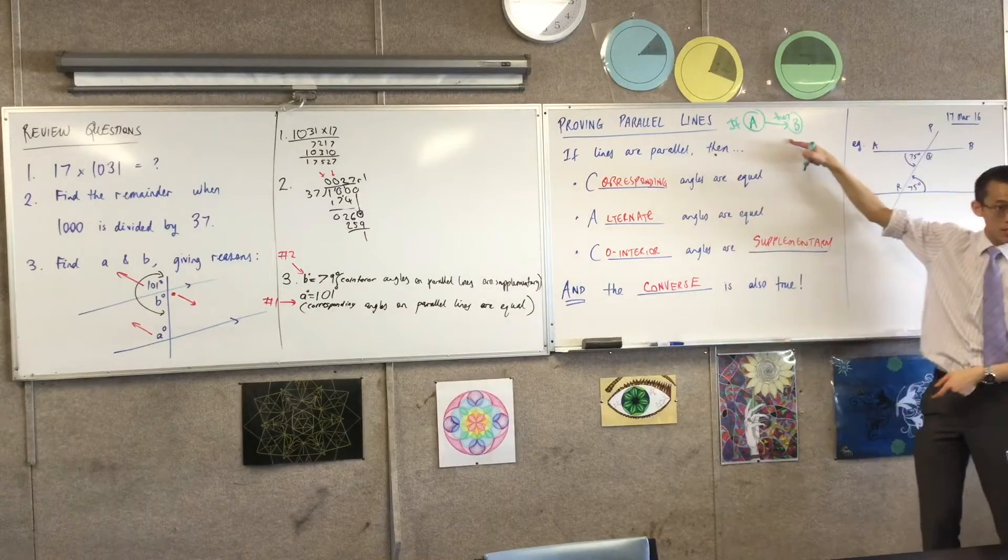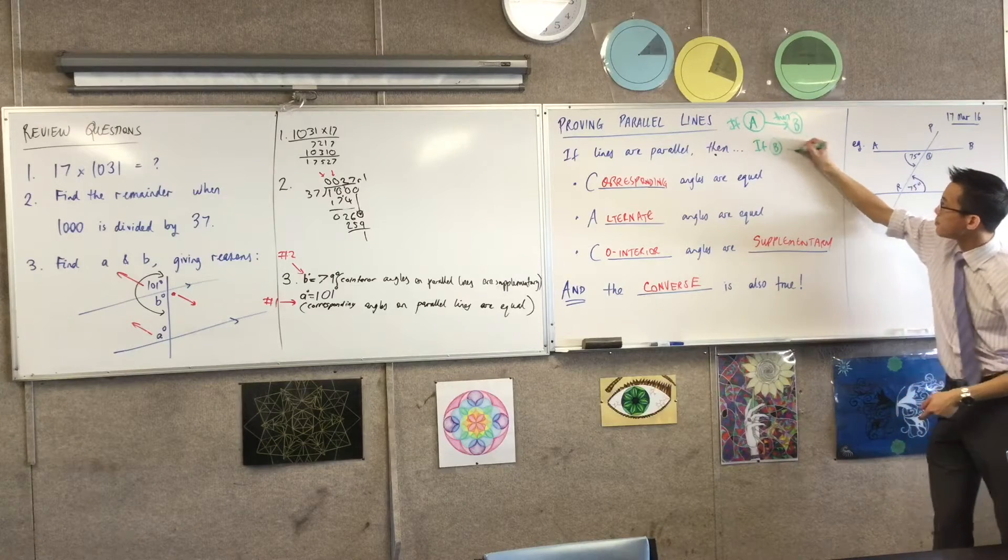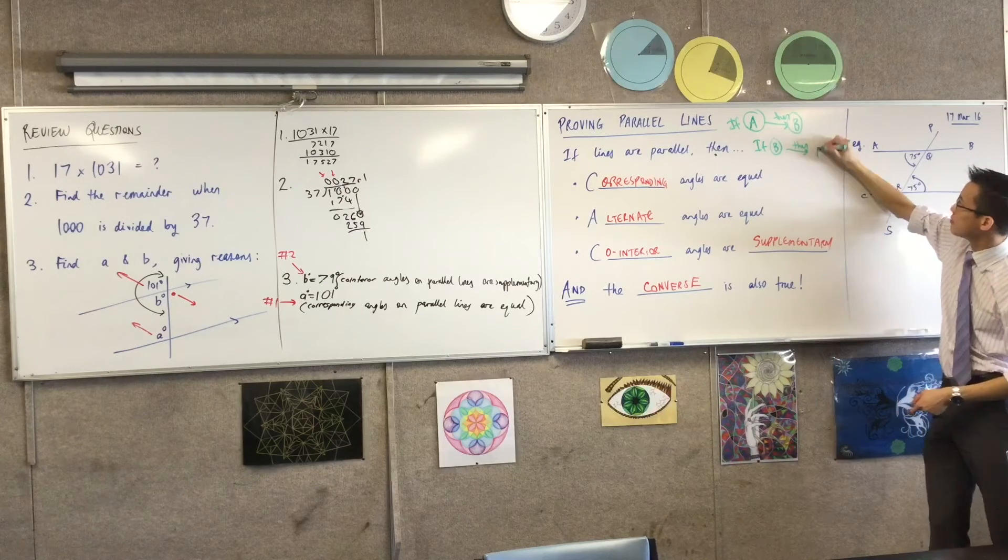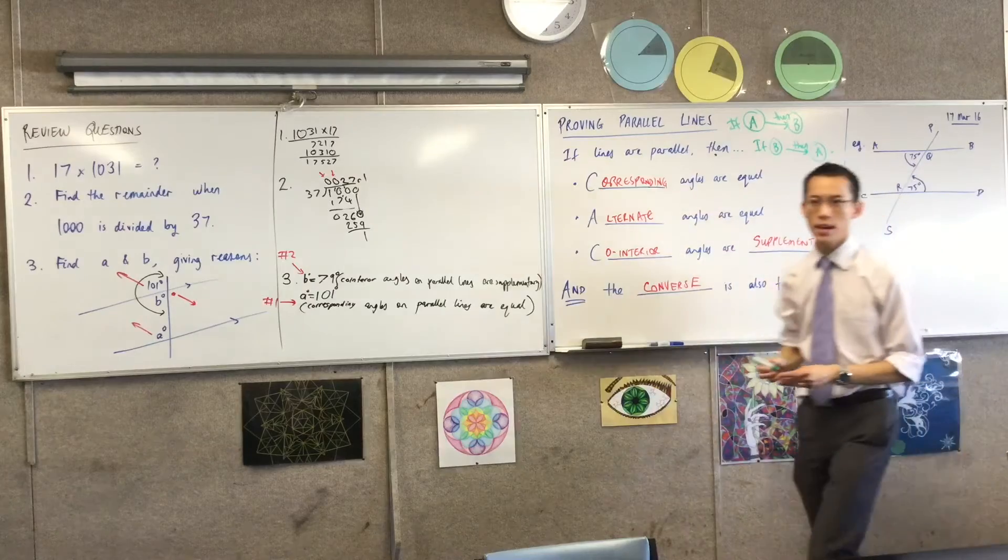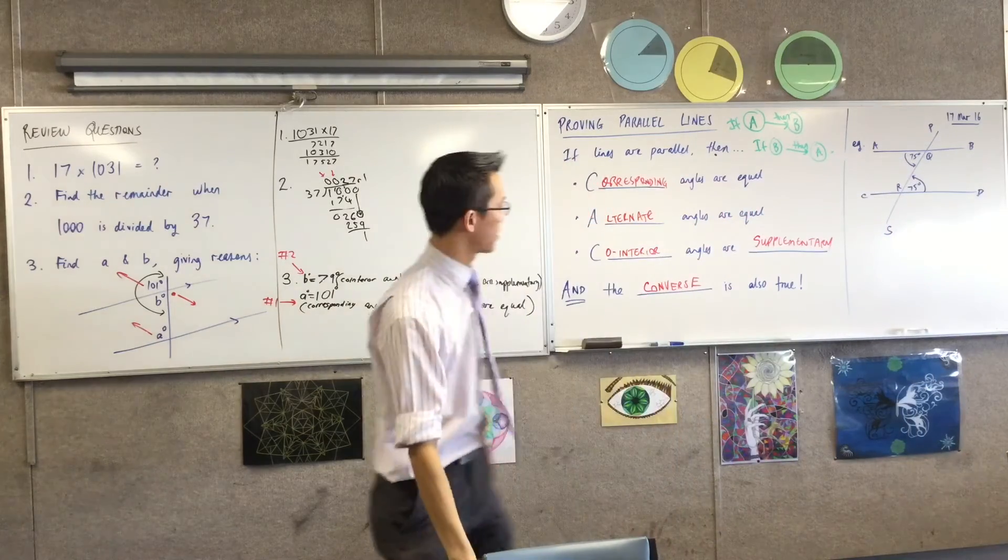The converse of this would be this: if B, then A. And you've got to be careful. In mathematics, as in real life, converses are not always true.